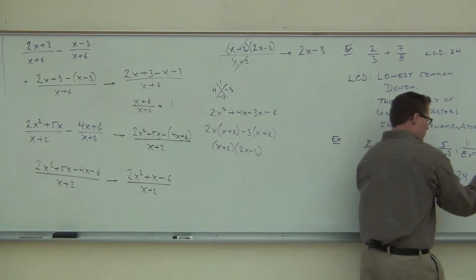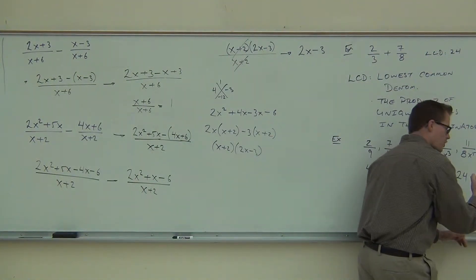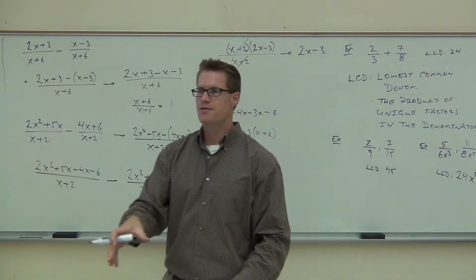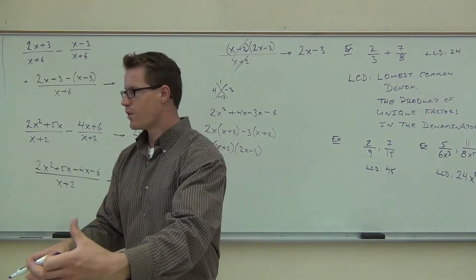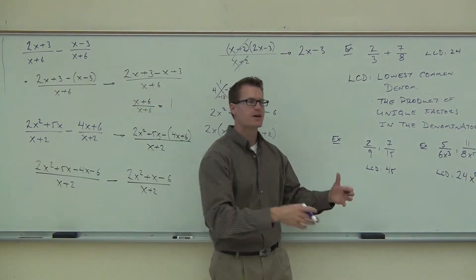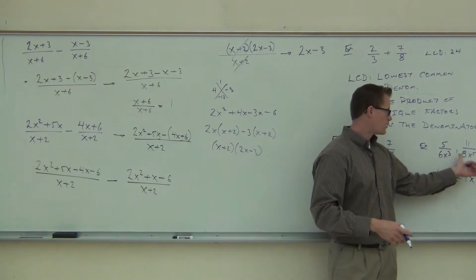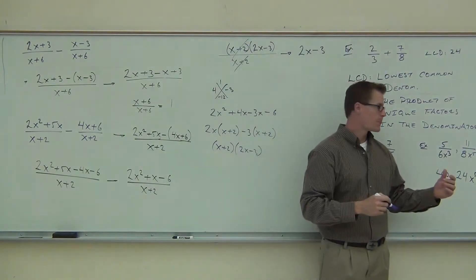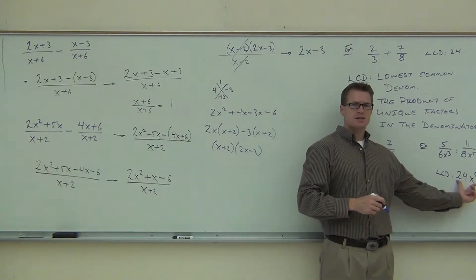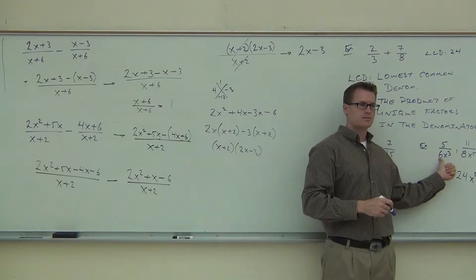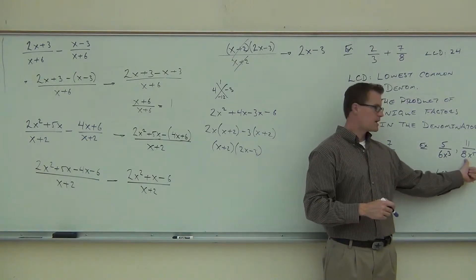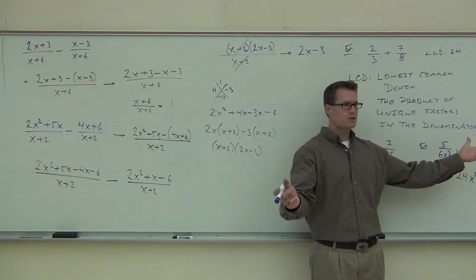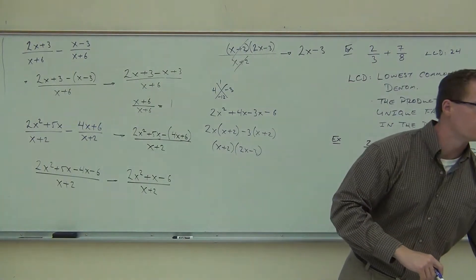So we'll write 24, no problem. We're going to take the largest power of each factor. If you have x's, take the largest power of x you can find. If you have y's, also take the largest power of y. Here we just have x's, so the largest power of x is x to the fifth — that goes in our LCD. You can check it: does 24x⁵ have at least a six? At least an eight? At least x to the third? At least x to the fifth? Yes — that covers both denominators.